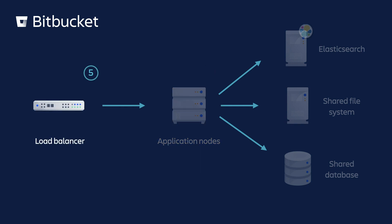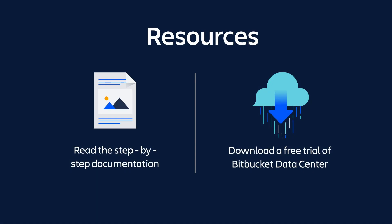Now you're ready to install and configure your load balancer. Choose the load balancer that best suits your organization, as long as it supports session affinity and HTTP, HTTPS, and TCP protocols. If your load balancer supports health checks of cluster nodes, configure it to perform a periodic check. Then add a new Bitbucket application node to the cluster by turning on Bitbucket Data Center from your installation directory. Once Bitbucket has started, go back into your admin console to verify the new node has successfully joined the cluster, then connect your cluster node to the load balancer — refer to your vendor's documentation for specifics. And that's it — you've successfully deployed Bitbucket in a clustered environment! Check out our resources for step-by-step documentation or to download a free trial.